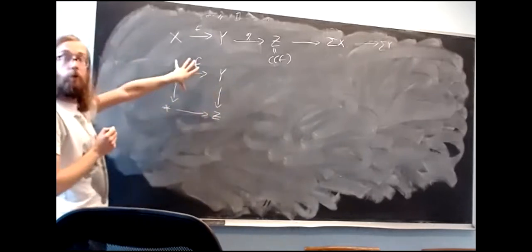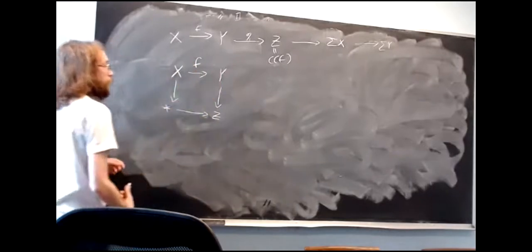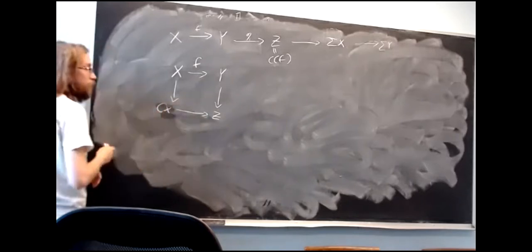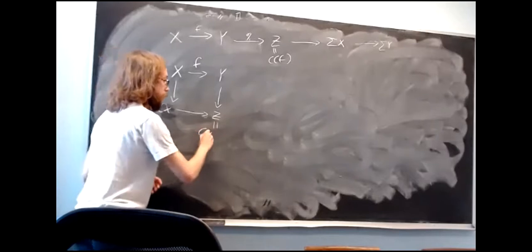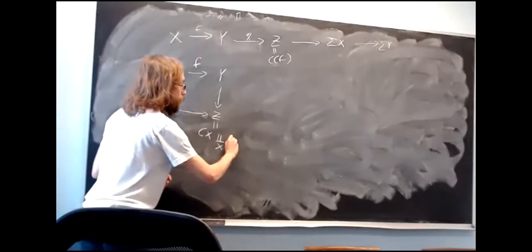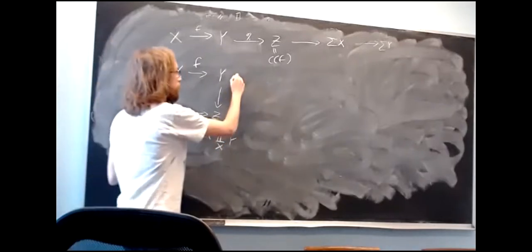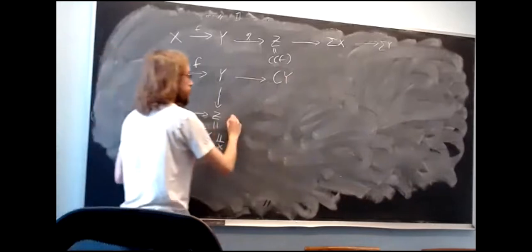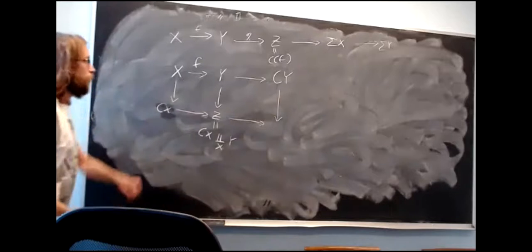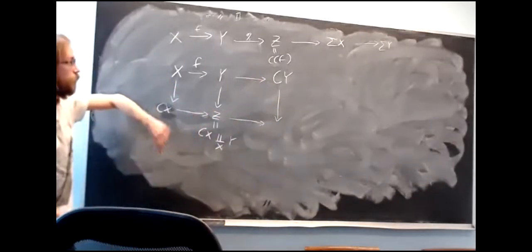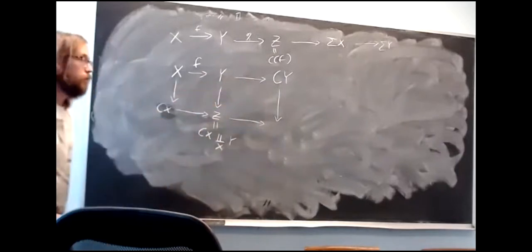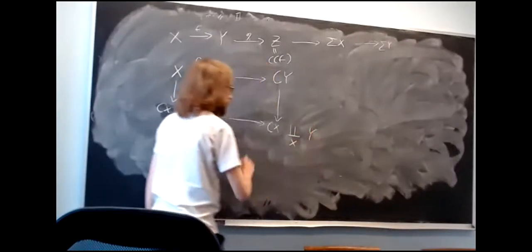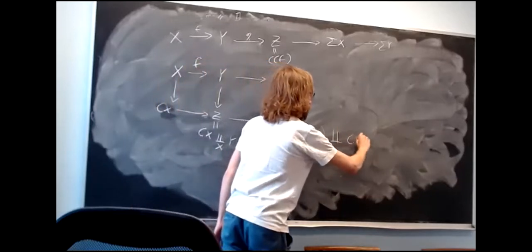So we said z is supposed to be the homotopy pushout of this square. A way to be more precise: make everything cofibrant, say x and y are cofibrant, and replace the point with the cone on x. So when we write z, we mean the cone on x glued to y along x. Likewise, we have an inclusion from y into a contractible object called the cone on y, and the homotopy pushout of the right-hand square is the literal pushout of this square.